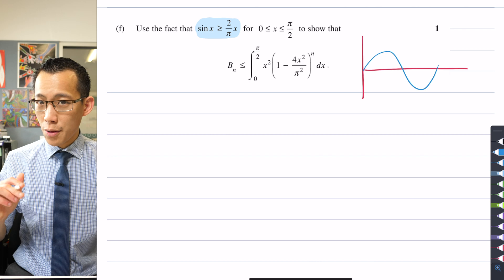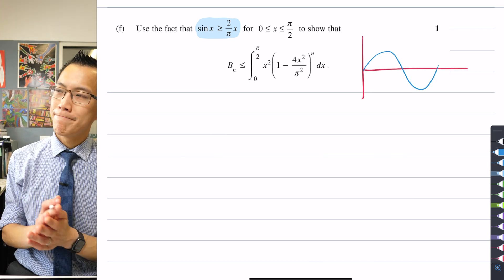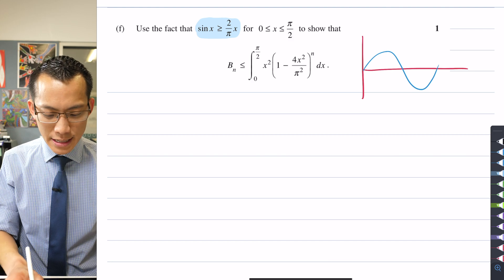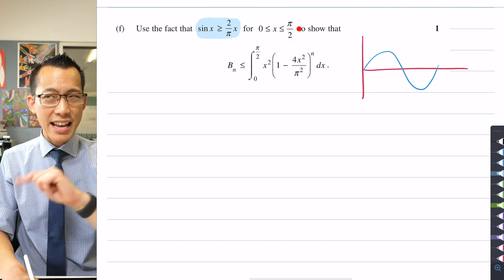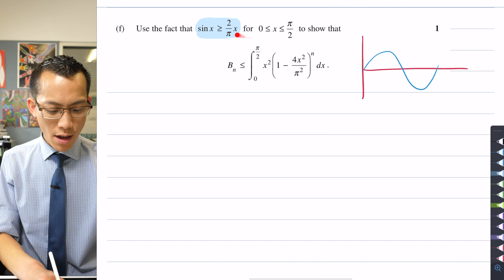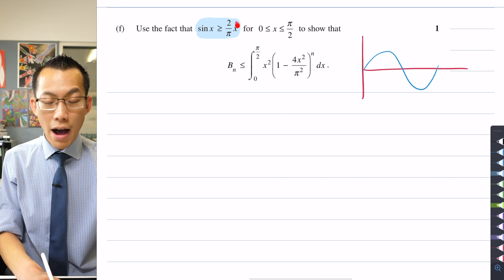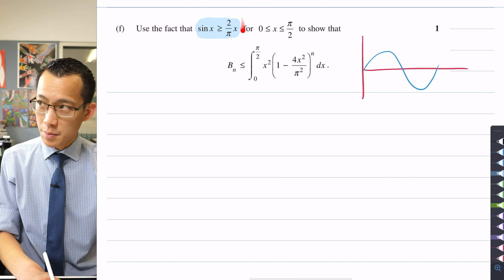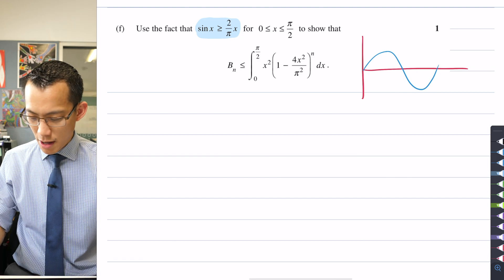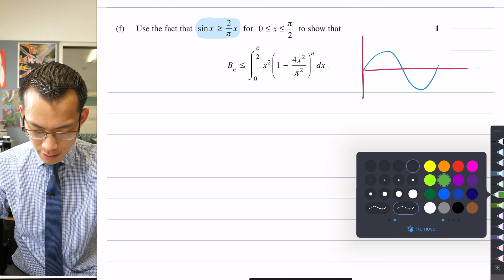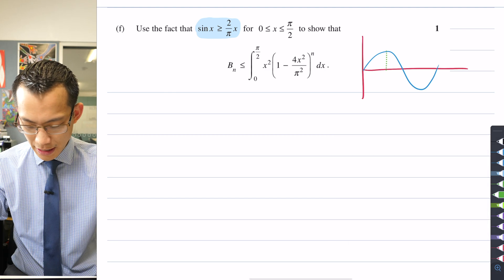When you think about 2 over pi x, this is a straight line, goes to the origin, and it's got a gradient of 2 over pi. Now, in a particular domain that we're thinking about, x equals pi over 2 is a specific point for this particular line, because when you substitute in pi over 2 here, you get 2 over pi times pi over 2, so you get 1. What does that mean? What's the significance of that? Well, at pi over 2, let's use this, the scale is awful, but that's okay.